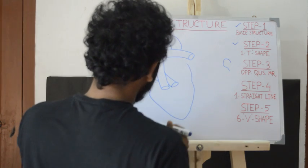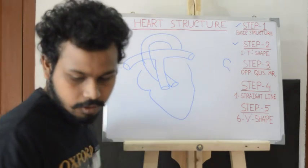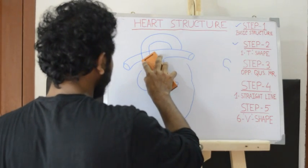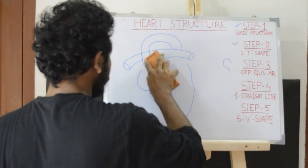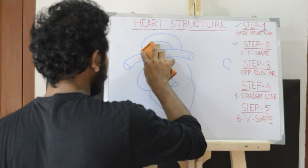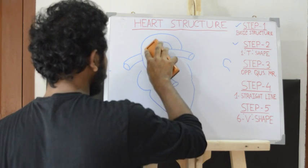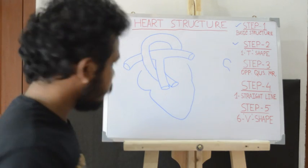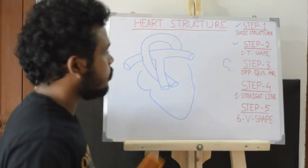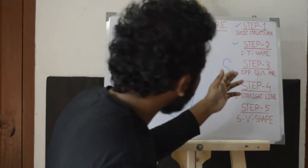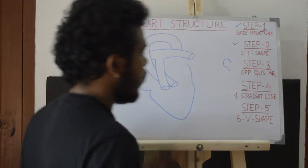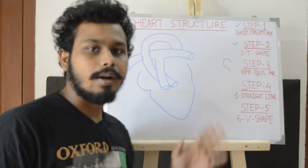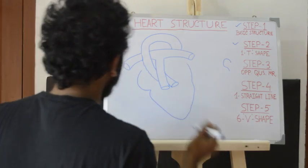This is the question mark structure — and that is the third step completed. The fourth step is the straight line — one straight line structure.